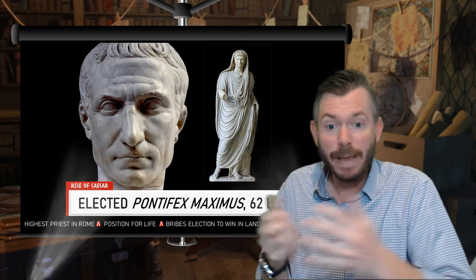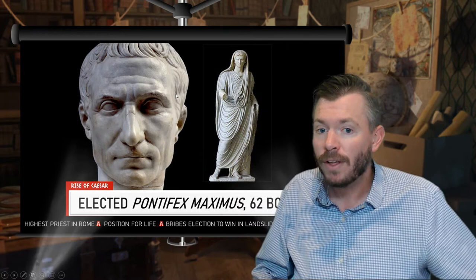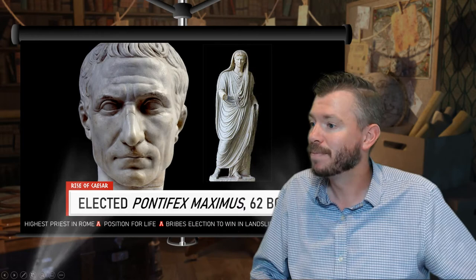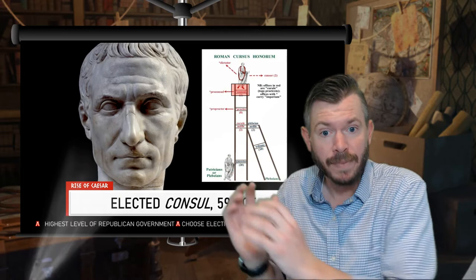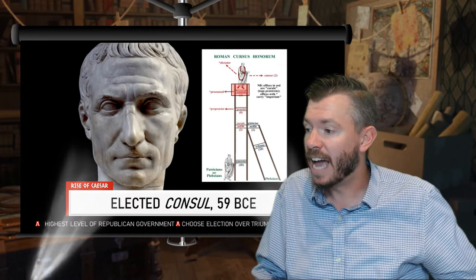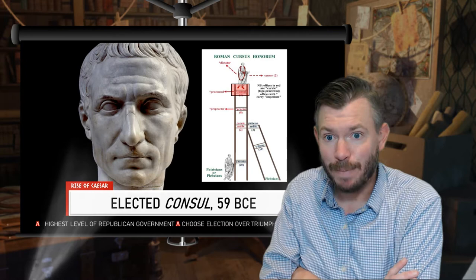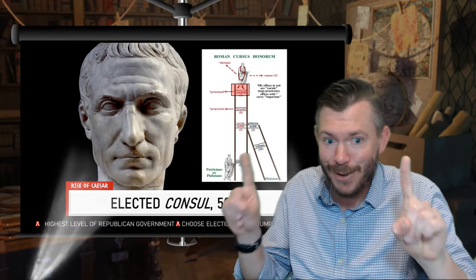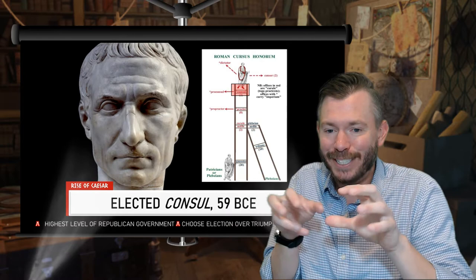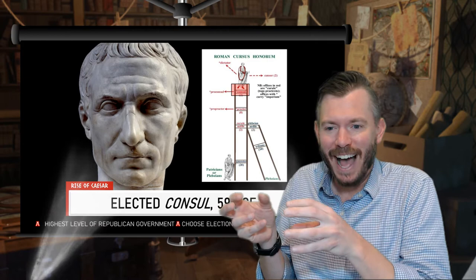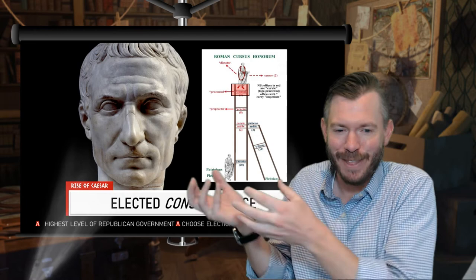One cool thing is that the title Pontifex Maximus is still used today — it's one of the titles for the Pope. Then, ten years after he first became quaestor, Caesar reaches the highest level of Roman government, becoming consul in 59 BCE. They actually call this year the consulship of Julius and Caesar, because the other consul had such a small impact that Caesar effectively played both roles, even though the rule is you always have to have two consuls ruling for one year.